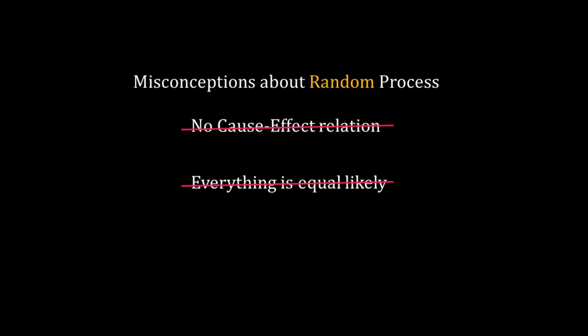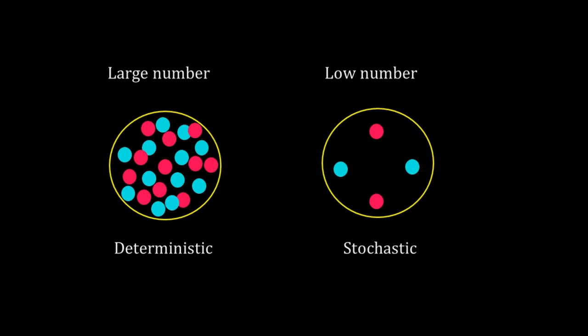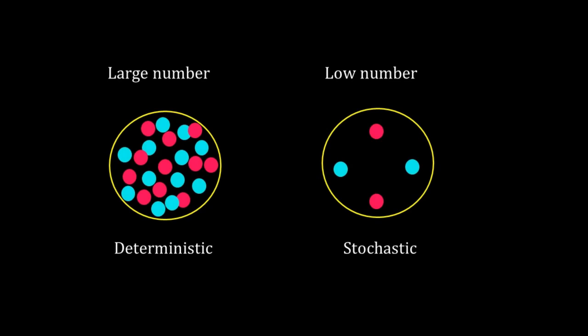To avoid these misconceptions, we will avoid using the phrase random processes; rather stick to the phrase stochastic process. Stochastic processes have uncertainty. However, the uncertainty increases when the system size is small.